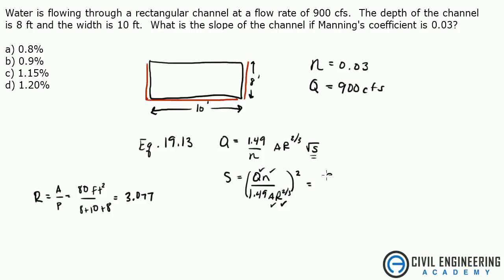So 900 cubic feet per second times 0.03 divided by 1.49 times the area, which is 80 feet squared, times R, which we just saw as 3.077, raised to the 2/3rds, and then all of this squared.